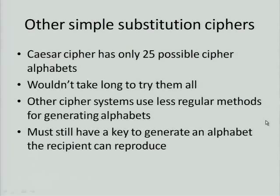Other cipher systems use less regular methods for generating their alphabets, but you must still have a key so that the person at the other end can decipher the message. Because if you just have a random alphabet, everyone has to carry around a little book that tells them which random alphabet. And if that person gets captured, then that alphabet falls into enemy hands. Whereas if it's some secret piece of information, the person at the other end can generate it more easily.